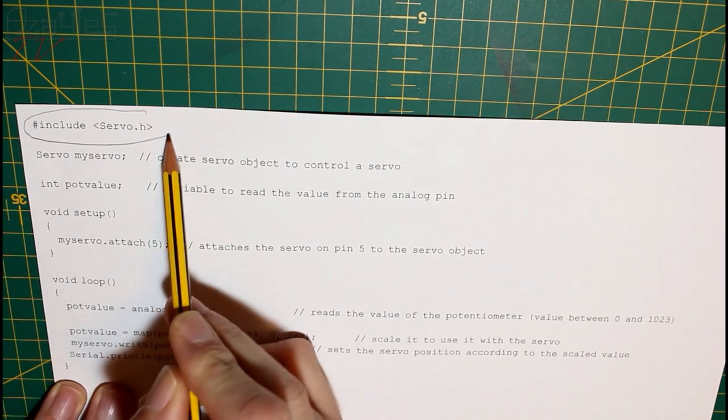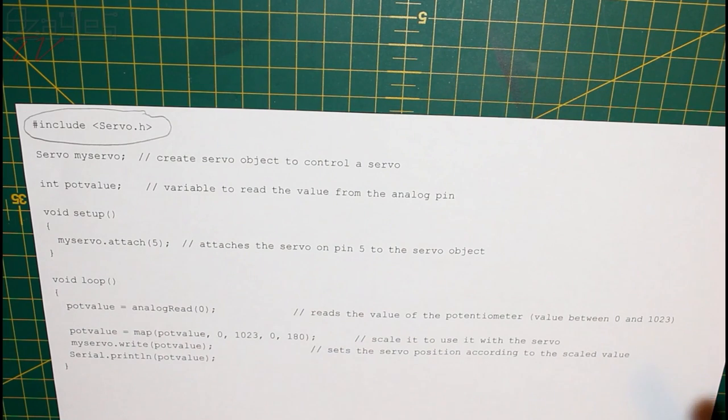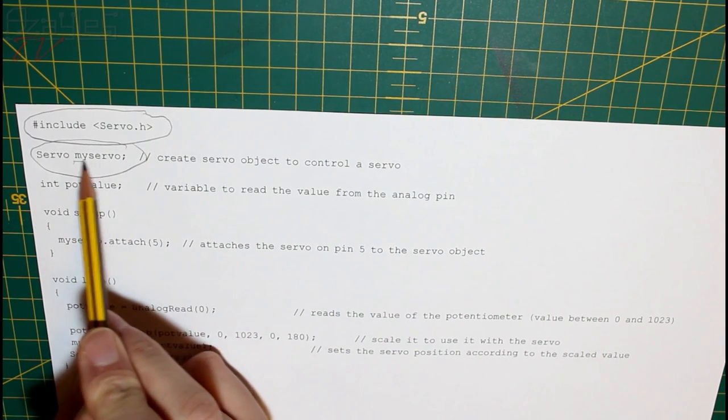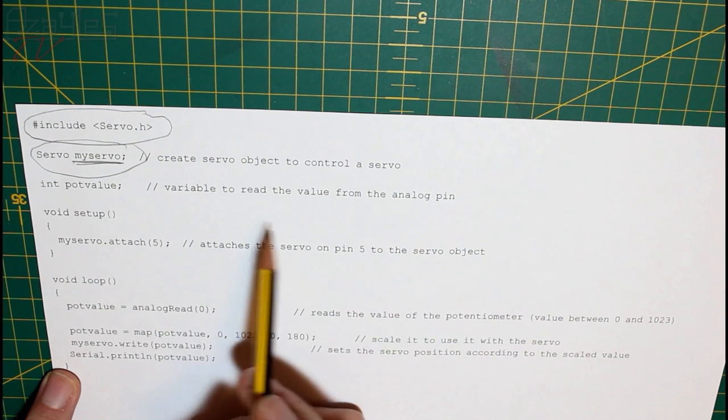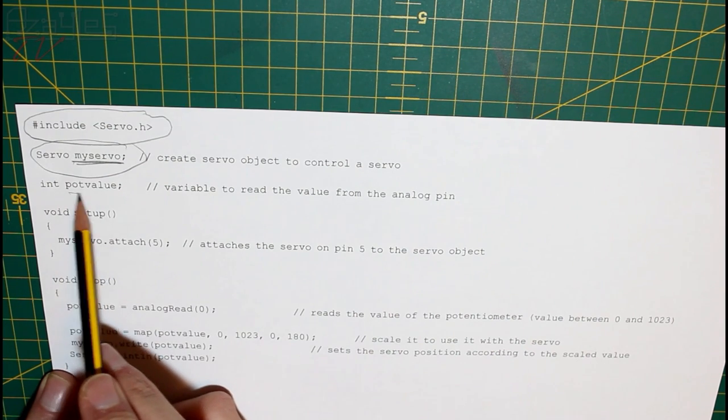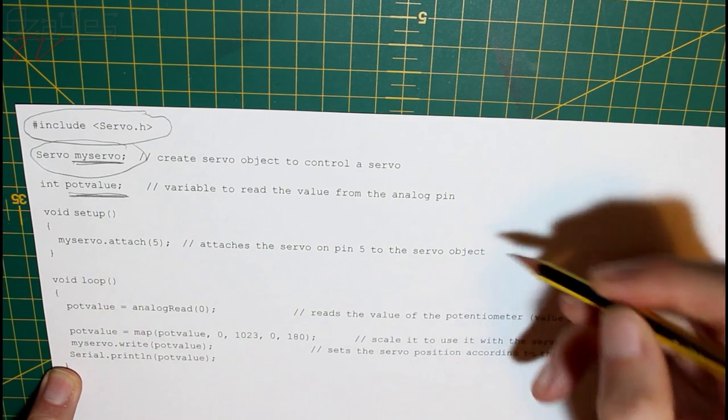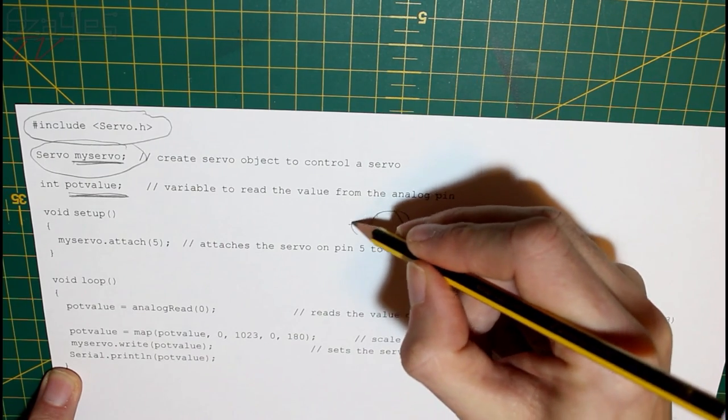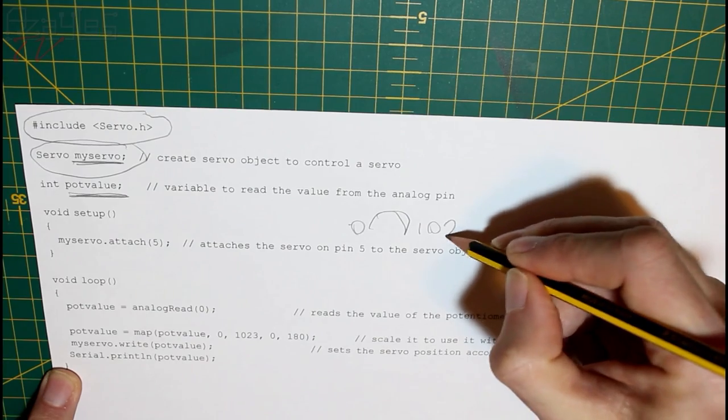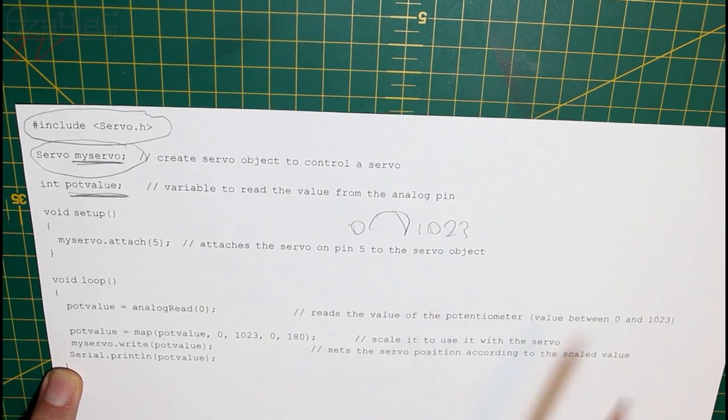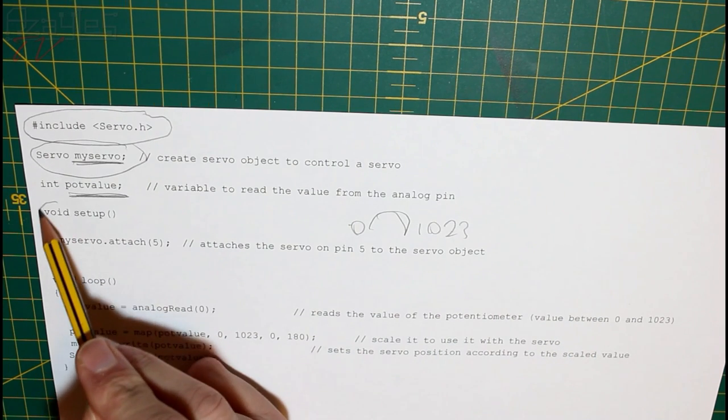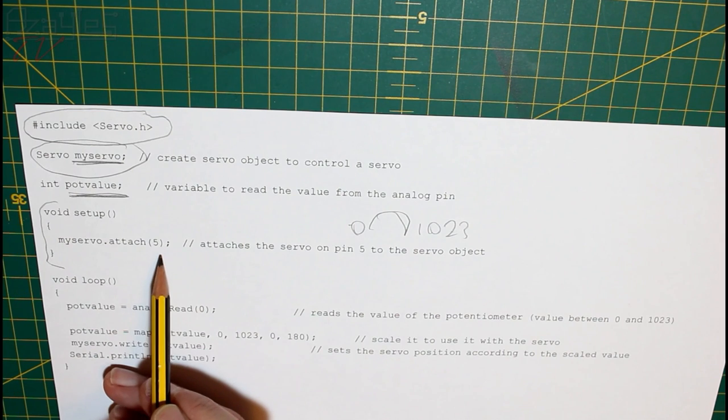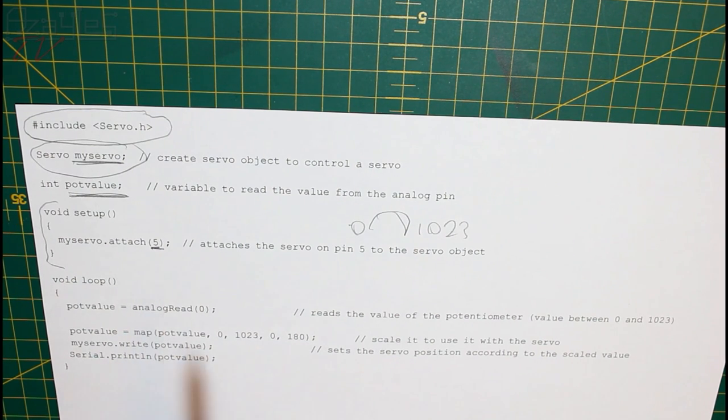This bit here loads up the servo library, which tells the Arduino we've got a servo attached to it. This gives it a name, calls it MyServo, and this one is the variable where we're storing the potentiometer value. So, as we turn the potentiometer left and right, we're generating a number. And that number is from 0 to 1,023. We'll need this later on. This bit here, the Void setup, that tells our Arduino that the servo is attached to pin 5.